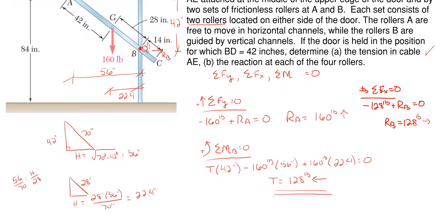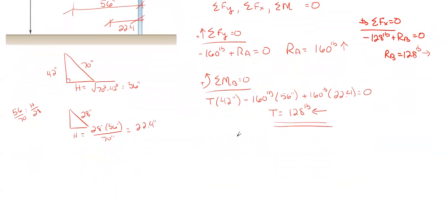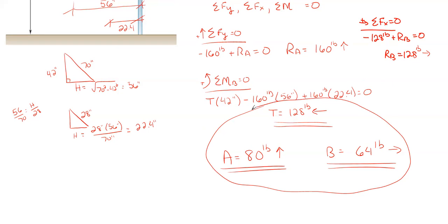So we have found the tension in the cable. Now we just have to determine part B, which is the reactions for each of our rollers. Remember, this is just showing a simplistic model. We really have two rollers here, one on each side in and out of the page here where the door actually connects in. So because we are consisting of two rollers at each location, to determine the actual roller amount at A and B, we would just take our values and divide them by two. So we have 160 pounds, divide that by two. And we have 80 pounds in that upward direction as a reaction at A. And then for B, we have 128 pounds to the right, divide that by two. And we have 64 pounds acting to the right. And there's my answers for this problem. And that's how you would solve this particular problem.